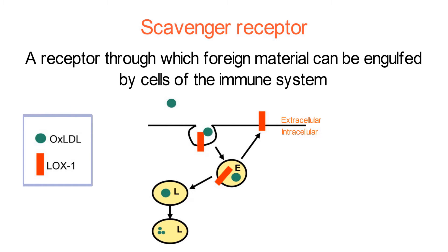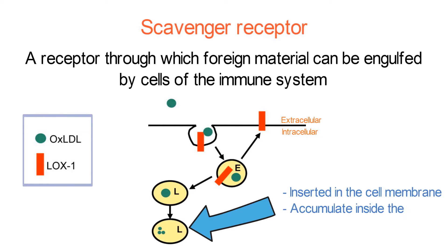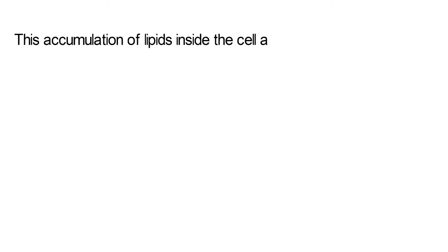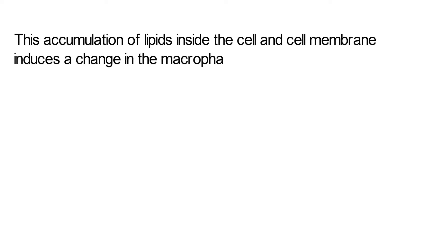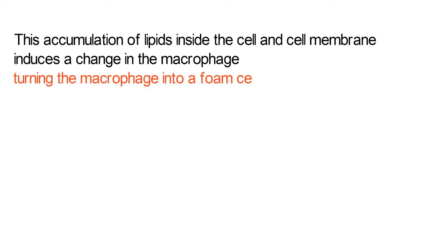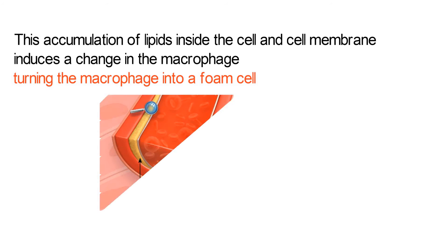However, unlike what occurs in the usual immune response, when macrophages phagocytose ox-LDL, the ox-LDL is broken down into smaller lipid particles that are inserted in the cell membrane and accumulate inside the cell. This accumulation of lipids inside the cell and cell membrane induces a change in the macrophage, turning the macrophage into a foam cell.